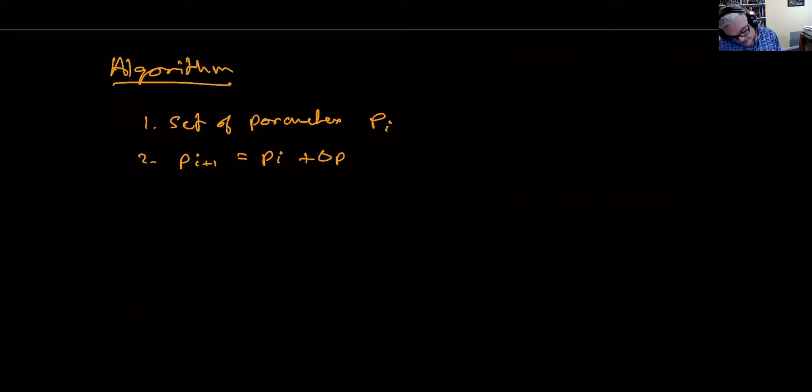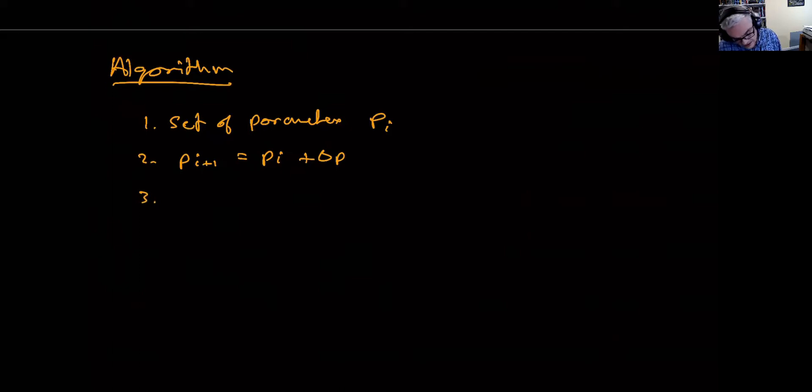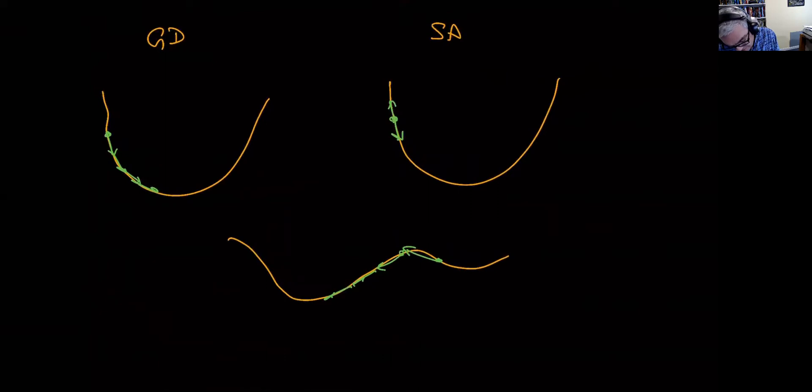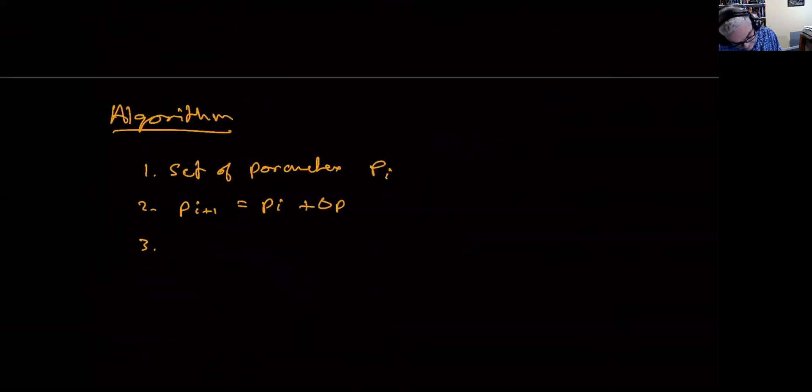Now I then ask myself in moving from pi to pi plus one, am I in a better place or not? That means have I moved closer to the minimum or further away? If I'm in a better position, well, that sounds good. In which case, yes, then I'll go back and try another move, move the parameters again. And I can ask whether I'm in a better position again and I keep going around and around. This is sort of similar to gradient descent, except that the change in the p doesn't necessarily guarantee a better position.